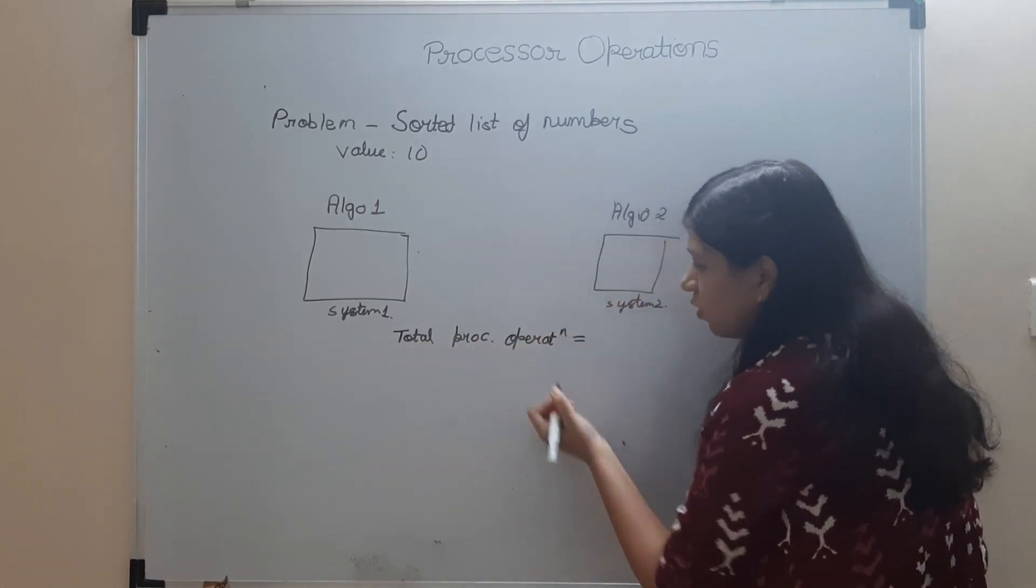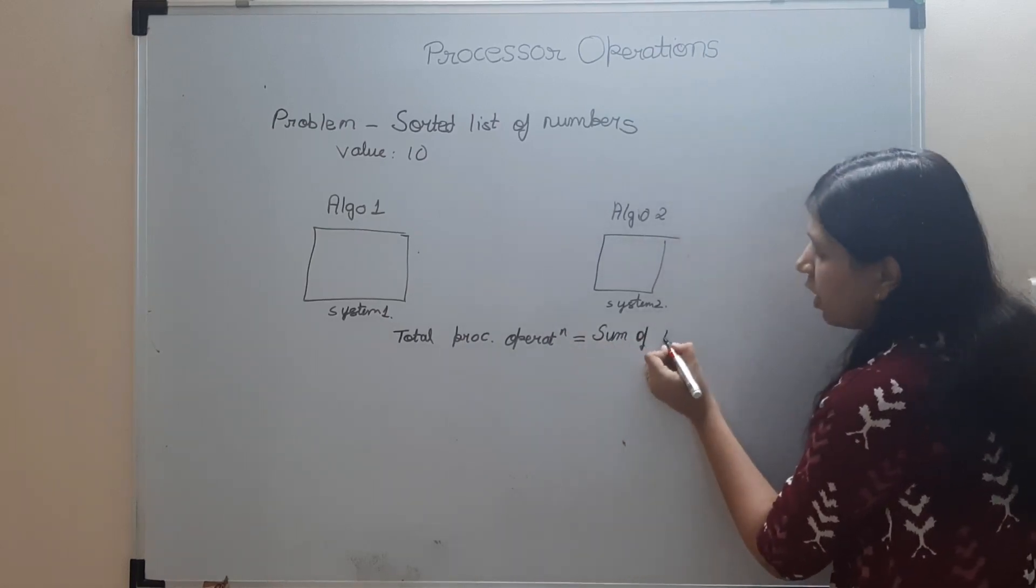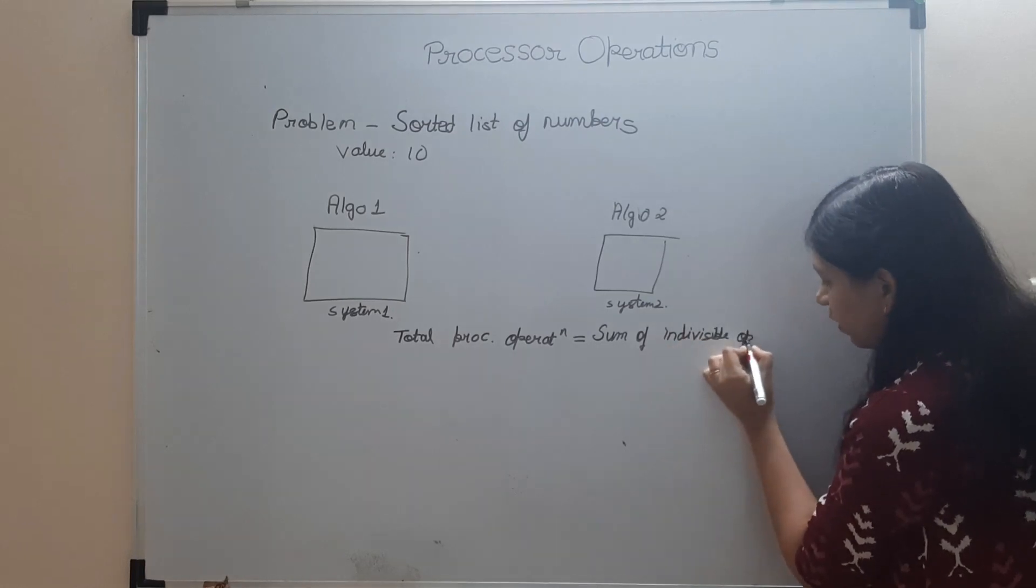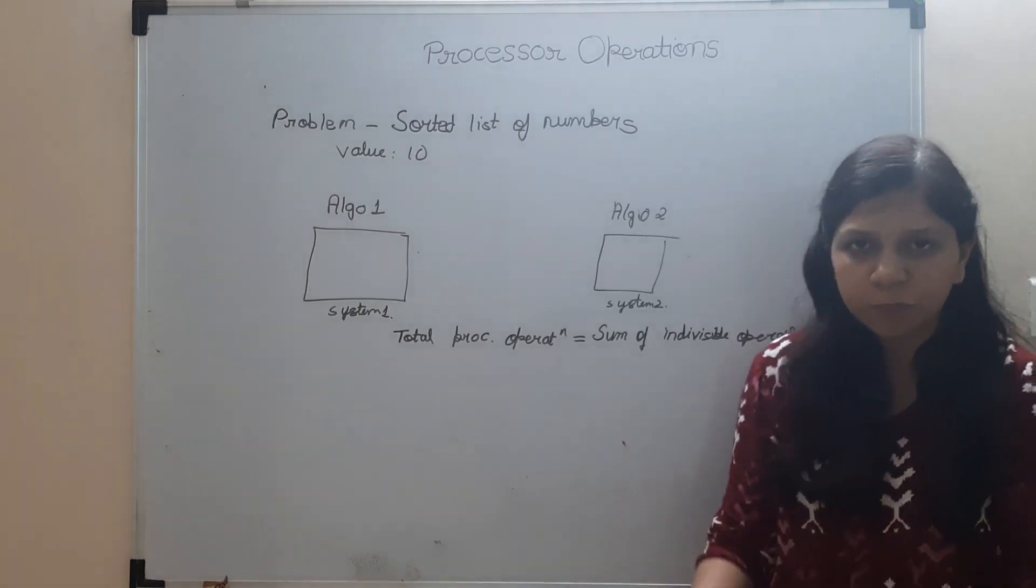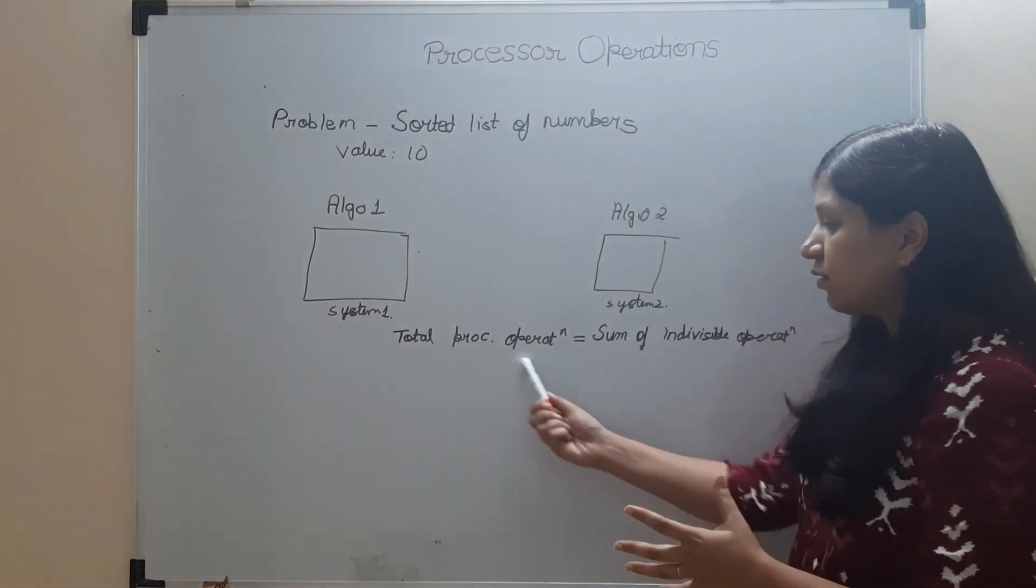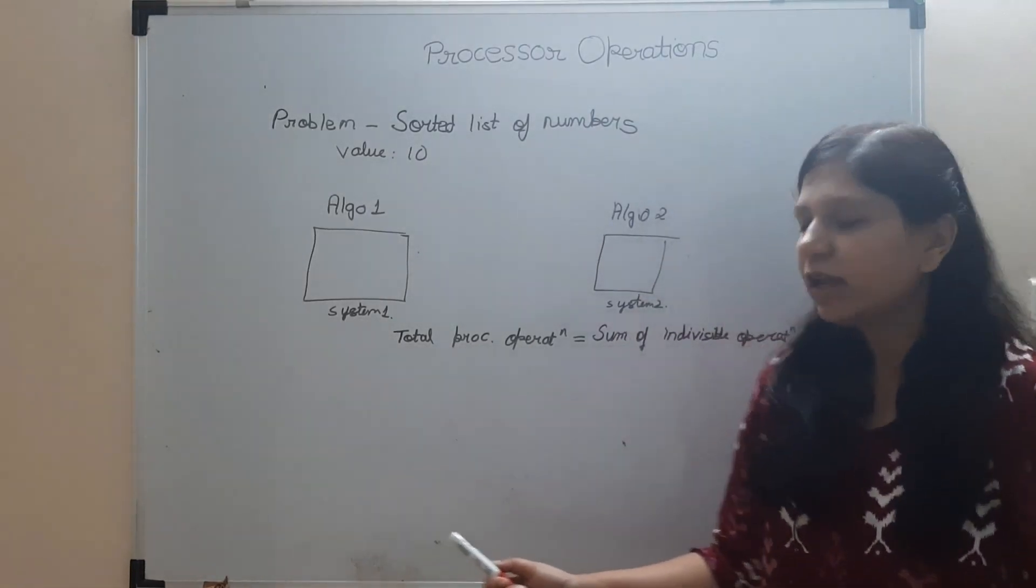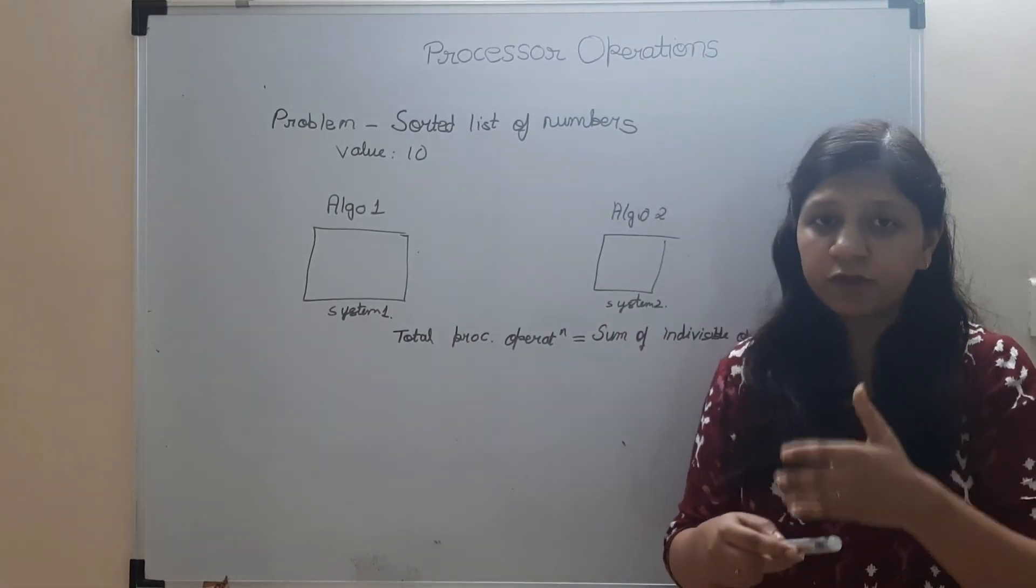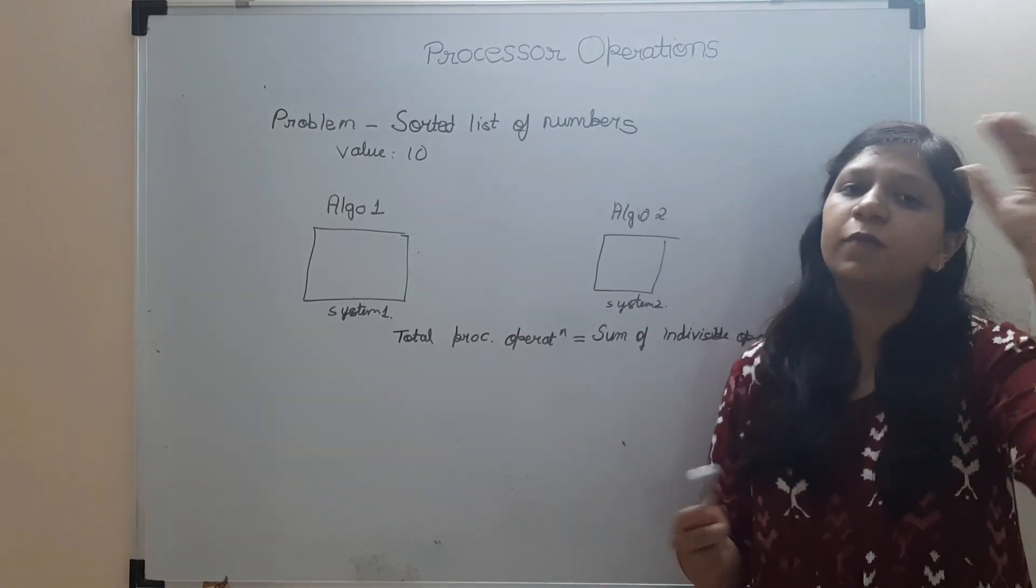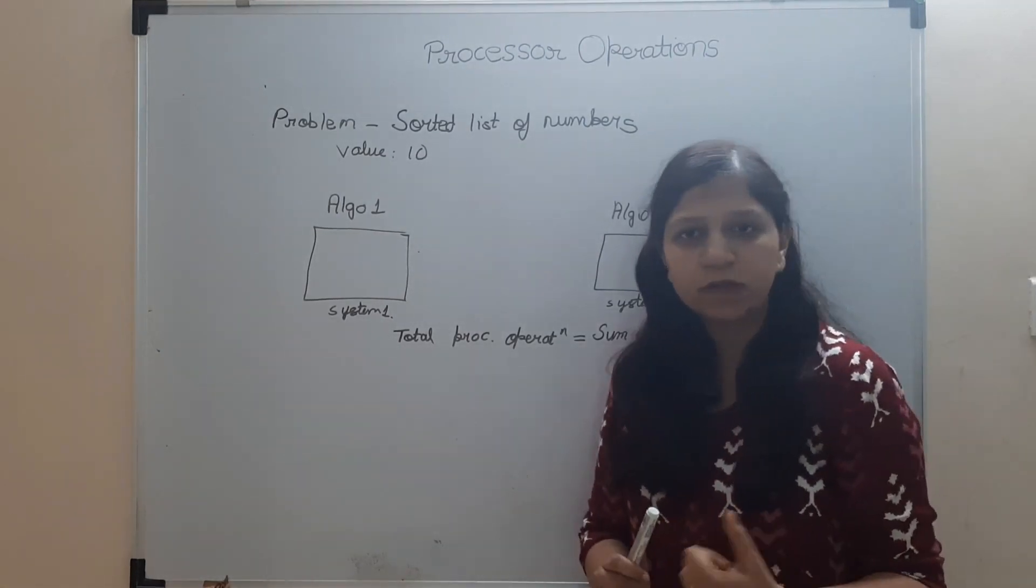So instead of running time, we shift our focus to processor operations. Now we are thinking to compare two algos on the basis of processor operations. Now how to calculate total number of operations of your code? Total processor operations - it is the sum of indivisible operations in your code. You will sum all of them, all of the indivisible operations that are there in your code. Now, what are indivisible operations? Those cannot be further divided. That's a single unit of operation that a processor will process.